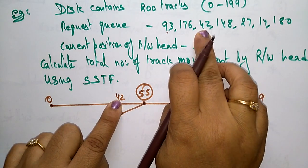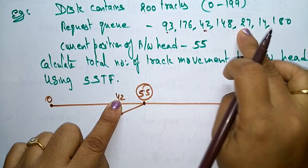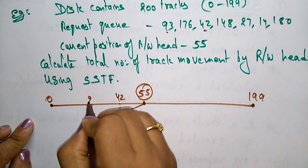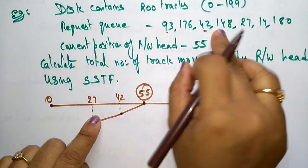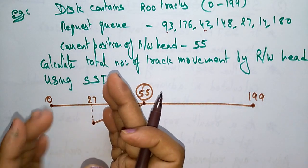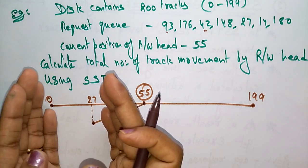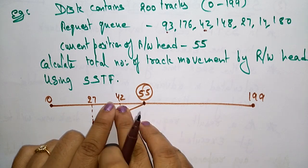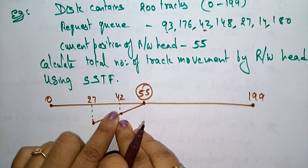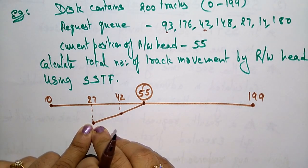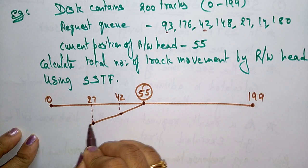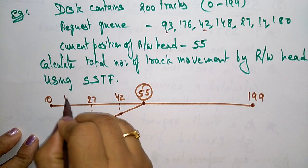From 42, the nearest one is 27, so next it visits 27. Don't take the smallest value — just take the nearest. The seek time is the time taken to reach that particular track. From 55 to 42 the distance is less, so we take that. After reaching 27, the next nearest is 14, so it reaches 14.